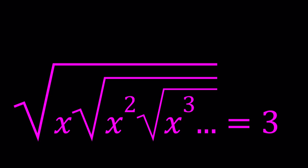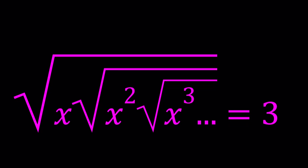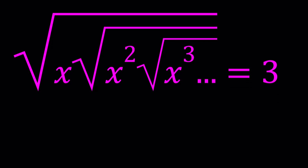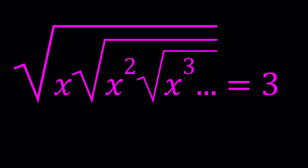Hello everyone. In this video we're going to be dealing with an infinite radical expression or an infinite radical equation. We have the square root of x times the square root of x squared times the square root of x cubed times the square root of x to the fourth, so on and so forth. The whole thing equals 3.